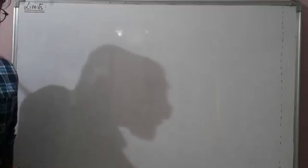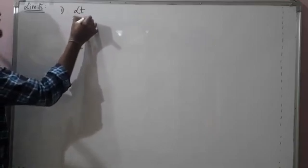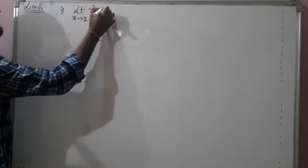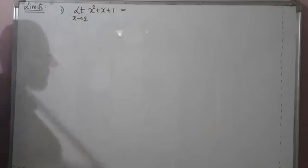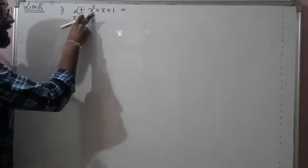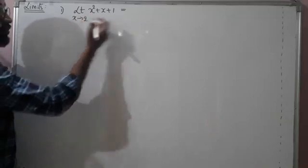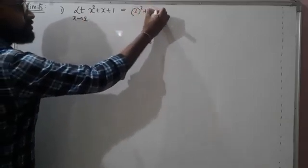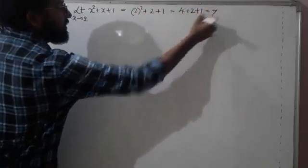Now let's solve simple limit problems from first year. Find: limit as x → 2 of (x² + x + 1). Solving this is very easy — you simply replace x with 2: 2² + 2 + 1 = 4 + 2 + 1 = 7.